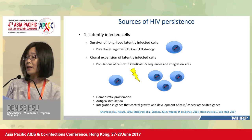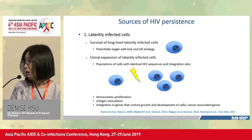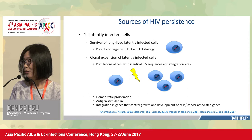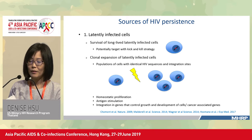One source of HIV persistence is latently infected cells, which are long-lived. To target these cells, we may potentially use the kick-and-kill strategy — using the kick to activate virus and kill mechanisms involving immune responses to eliminate the expressed virus.